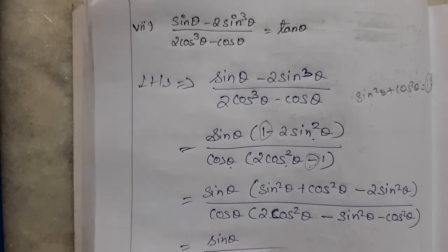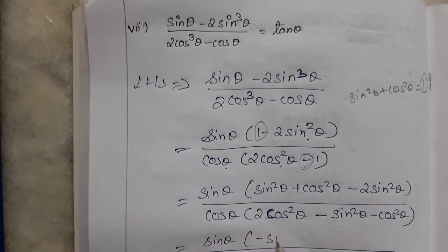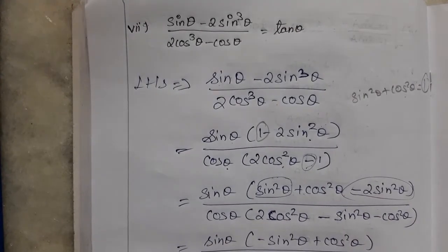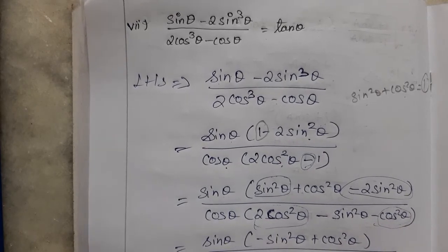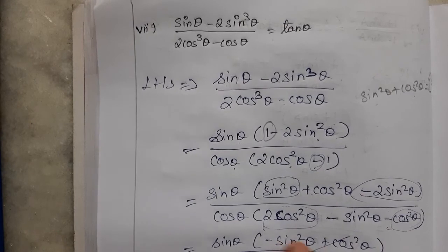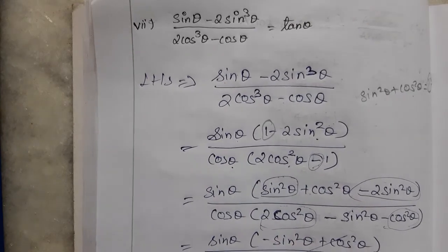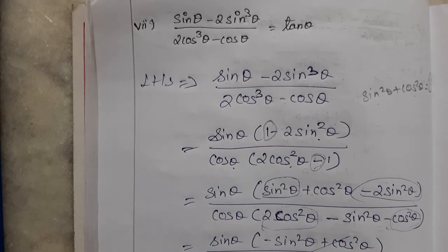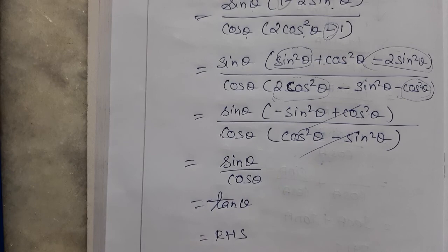Simplifying the numerator bracket: sin squared theta minus 2 sin squared theta gives minus sin squared theta, plus cos squared theta remains. So numerator bracket is cos squared theta minus sin squared theta. Denominator bracket: 2 cos squared theta minus cos squared theta gives cos squared theta, minus sin squared theta. So numerator and denominator brackets are both cos squared theta minus sin squared theta. They cancel, leaving sin theta divided by cos theta, which equals tan theta. Hence proved.